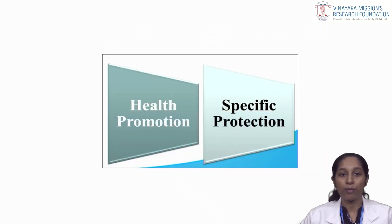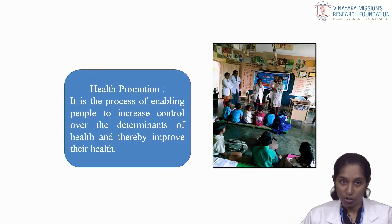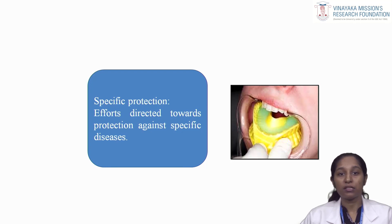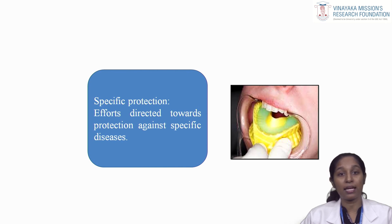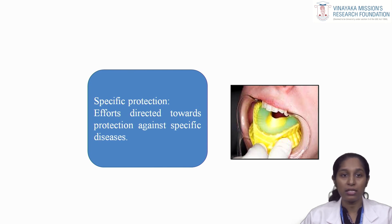Primary prevention is achieved mainly through health promotion and specific protection. Health promotion activities aim to enhance the overall health and well-being of the general population through a variety of interventions, including health education, environmental modifications, nutritional interventions, and lifestyle and behavioral changes. The second component involves specific protection measures, which target particular diseases or health events to prevent their occurrence within specific areas or populations. The use of vaccinations, the use of fluorides, and use of pit and fissure sealants for caries prevention are all examples of specific protection.